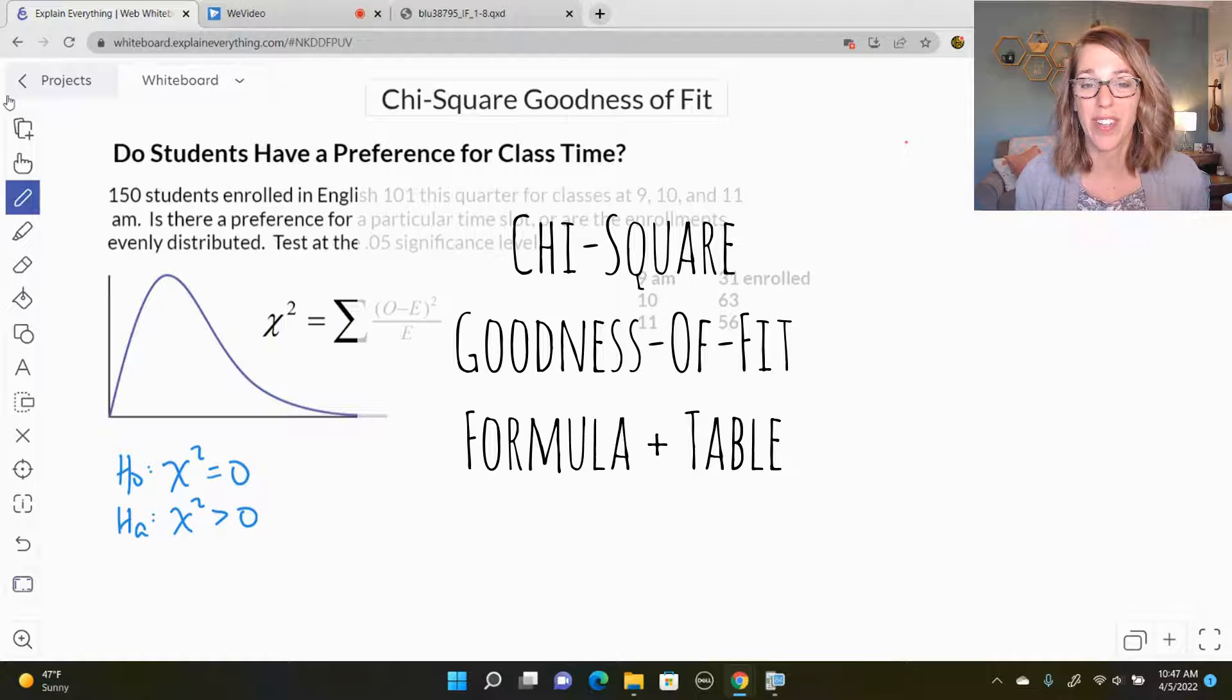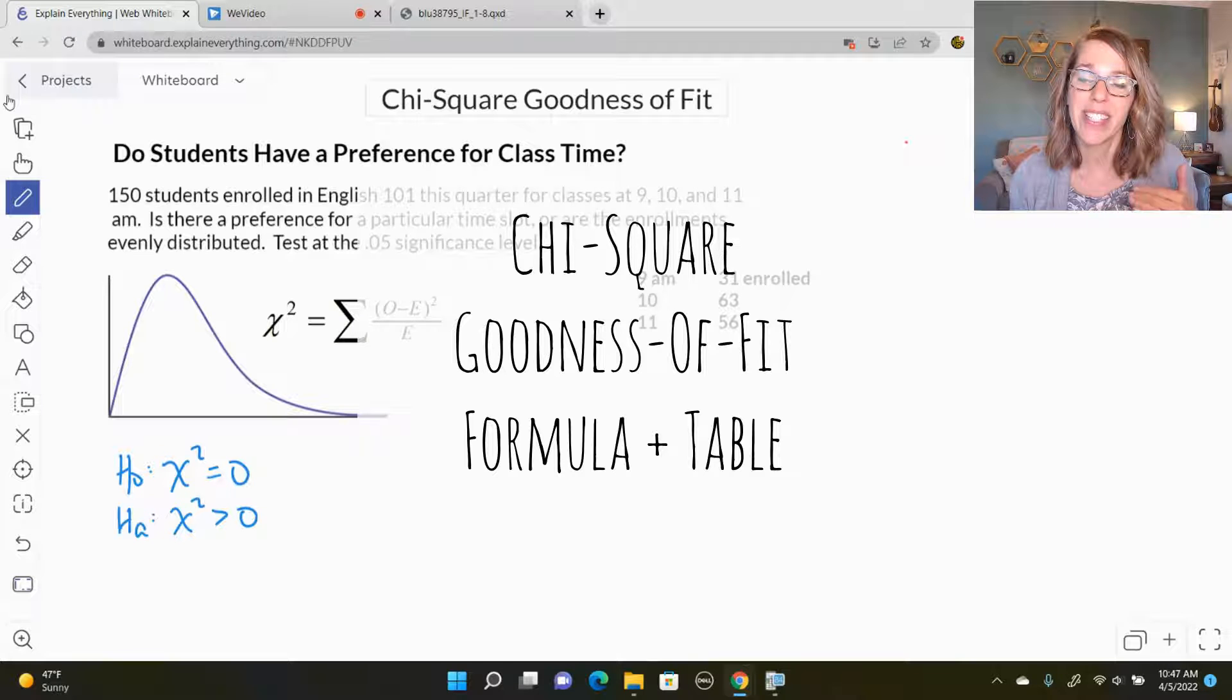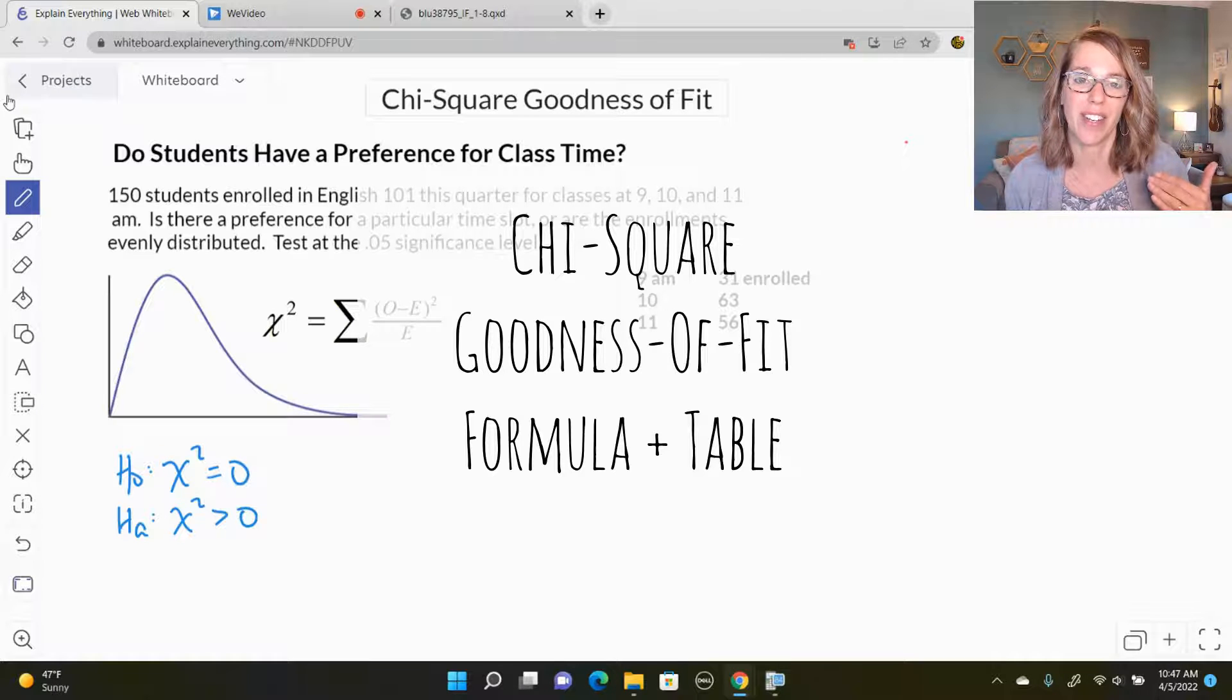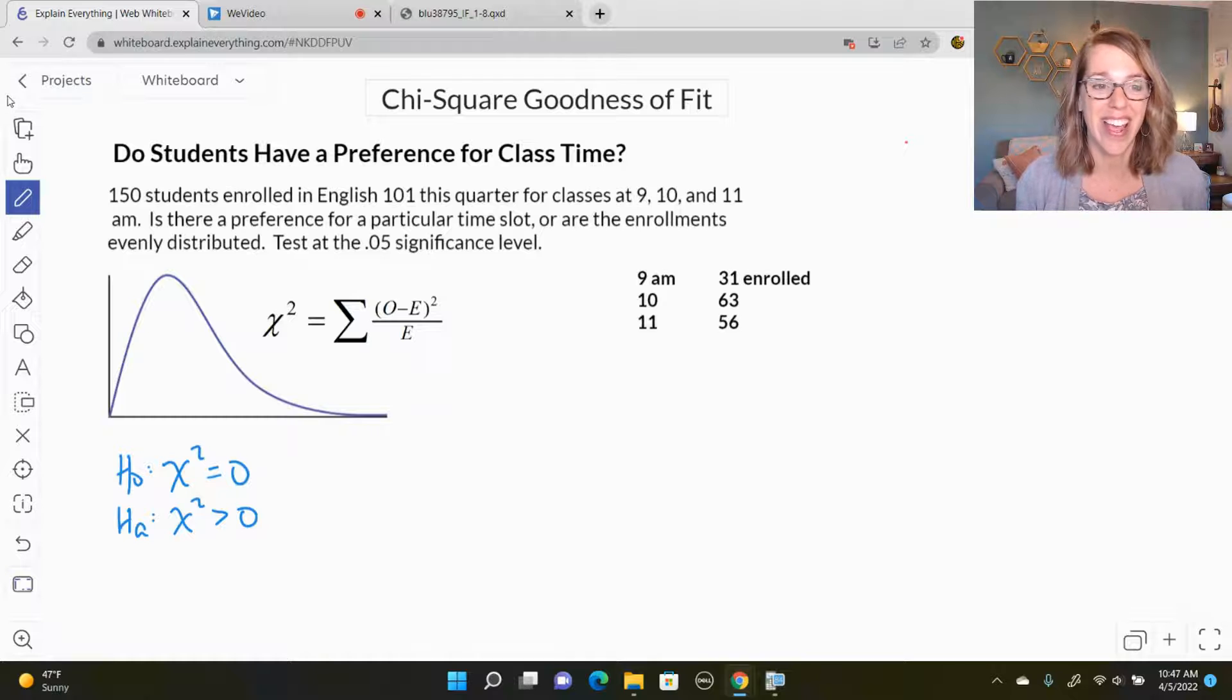I'm going to show you how to do a chi-square goodness of fit test by hand. We're going to be using the formula to compute the chi-square measure. If you want to see how to do this using the TI-84 calculator or using Excel and Google Sheets, take a look at my description for those links down below or you can click on the card here. Let's go ahead and dive in.